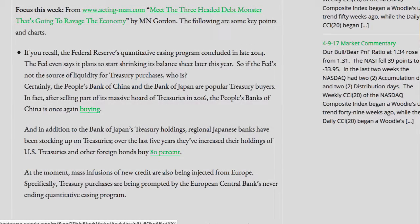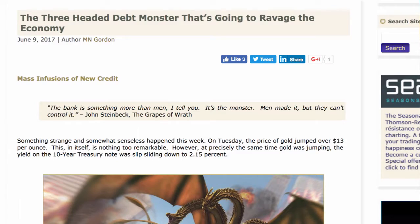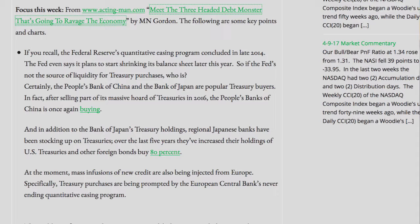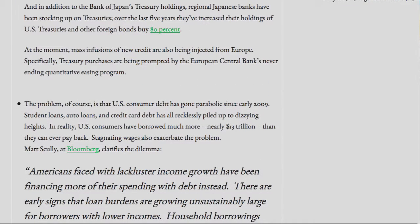Focus this week from www.actingman.com: 'The three-headed debt monster that's going to ravage the economy' by M.N. Gordon. The following are some key points and charts. If you recall, the Federal Reserve's quantitative easing program concluded in late 2014. The Fed even says it plans to start shrinking its balance sheet later this year. So if the Fed's not the source of liquidity for Treasury purchases, who is? Certainly, the People's Bank of China and the Bank of Japan are popular Treasury buyers. After selling part of its massive hoard of Treasuries in 2016, the People's Bank of China is once again buying.